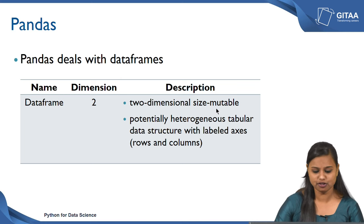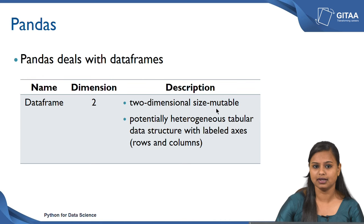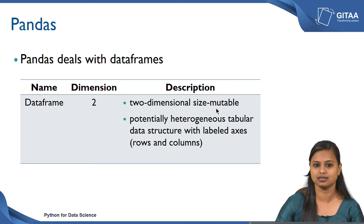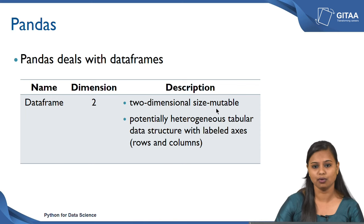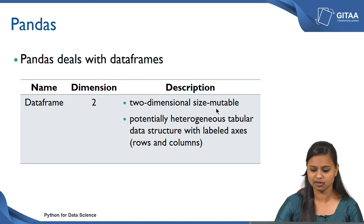The second point is that a DataFrame is a potentially heterogeneous tabular data structure with labeled axes. Heterogeneous tabular data structure means that whenever we read data into Spyder, it becomes a DataFrame and each variable gets a data type automatically — we do not need to explicitly specify the data type for each variable. That is determined based on the type of data contained in each variable or column.